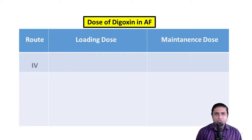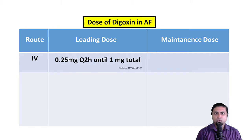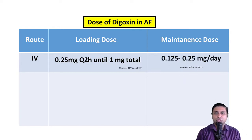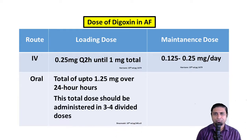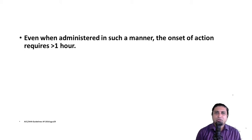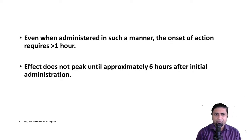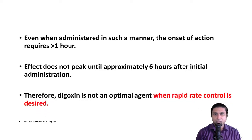If using the IV route, the loading dose of digoxin in atrial fibrillation is 0.25 mg every two hours until a total dose of 1 mg is achieved. The maintenance dose is 0.125 to 0.25 mg per day. If giving digoxin by the oral route, the loading dose is up to 1.25 mg over 24 hours, divided into three to four doses. The maintenance dose is again 0.125 to 0.25 mg per day. Even when administered in this manner, the onset of digoxin requires more than an hour and it takes up to six hours for the action to peak. Therefore, digoxin may not be an optimal agent when rapid rate control is desired.